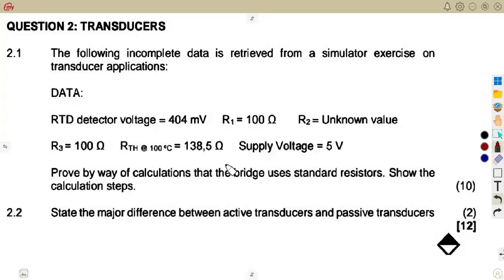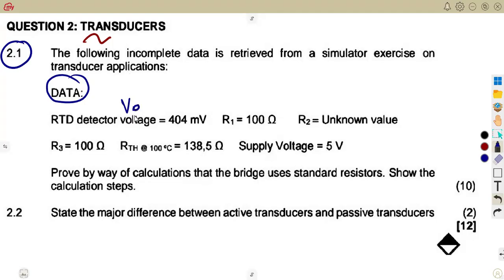In this case we need to consider another typical exam question on transducers. On question 2.1, the following incomplete data is retrieved from a simulator exercise on transducer applications. The given data includes: the RTD detector voltage VD, R1, R2 as an unknown value, R3 = 100Ω, the thermometer resistance at 100 degrees, and the supply voltage VS.